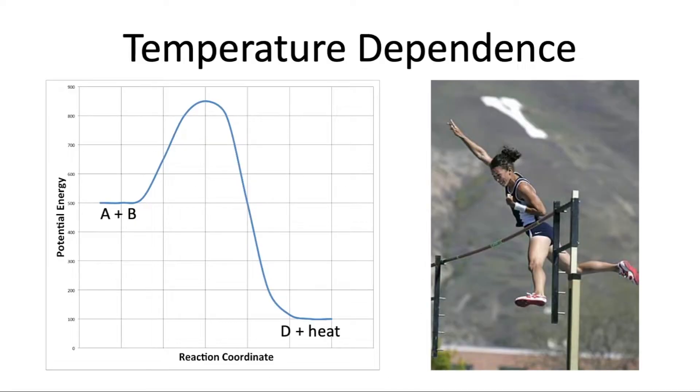Today in class you'll also be looking at the temperature dependence of the equilibrium constant. And this is just a generic reaction coordinate diagram where we've got reactants on the left and products on the right. And essentially when we raise the temperature it's going to affect the rate of the forward reaction differently than the rate of the reverse reaction.